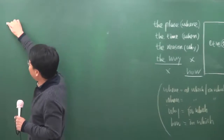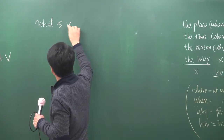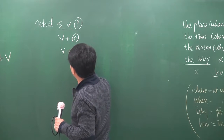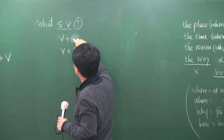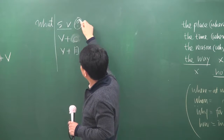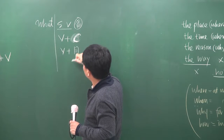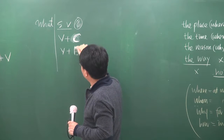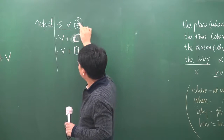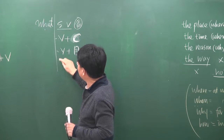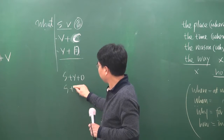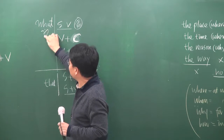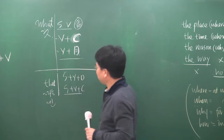what은 주어+동사로 불완전 문장(목적어나 보어가 비어있거나 주어가 없는 경우)을 이끌고, that은 완벽한 절이 나오면 씁니다. what은 '~하는 것'으로 해석하고, that은 '~라는, ~인'으로 해석합니다.